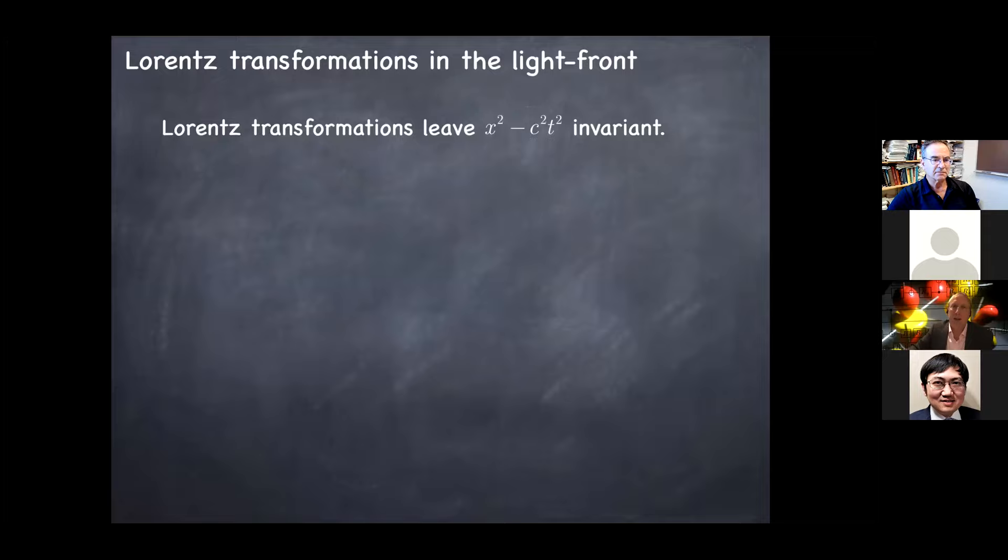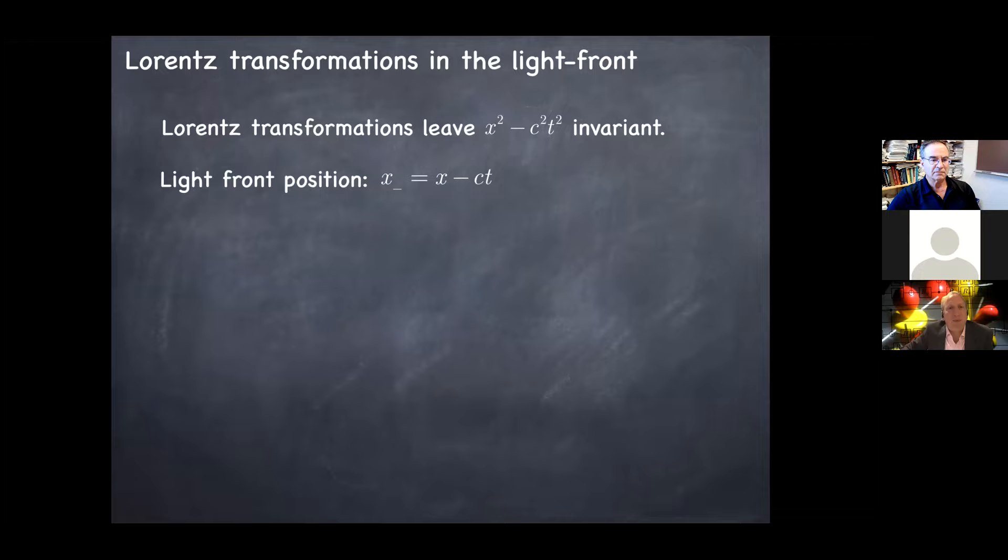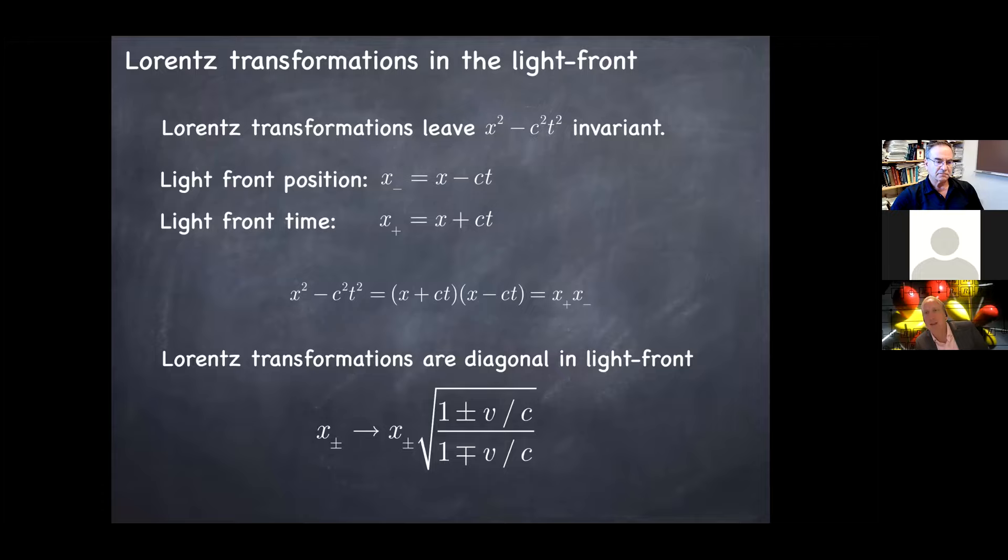So let's explain, x squared minus c squared t squared. So the light front position is x minus ct and the light front time is x plus ct. For some reason, I've chosen down indices on this slide, but just by trivial algebra, you can see that this interval is the product of the position times the time. And so how must Lorentz transformations act on the position and the time if they leave this product invariant? Well, it's very easy to convince yourself that they have to just multiply the light front time and the light front coordinate. And so that means Lorentz transformations are diagonal in the light front. And so they're just a scaling of the position and the coordinate. There's no mixing of the coordinates, which is a very kind of simple and appealing feature of these coordinates.